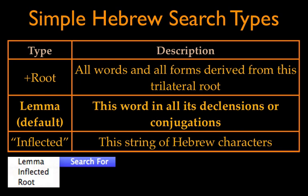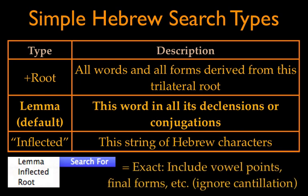Note that 'inflected' has a different meaning in Accordance than it may have had in your Hebrew class. It does not mean an exact conjugation of a particular root — it means a specific string of Hebrew radicals. That means an Accordance inflected search will find homographs: words that have identical character strings but different roots or conjugations. Either a lemma or an inflected search can be modified and made exact by adding an equal sign. An exact search includes vowel pointing, the dagesh, and final forms, though it still ignores cantillation.